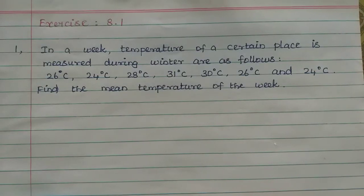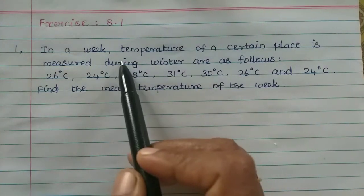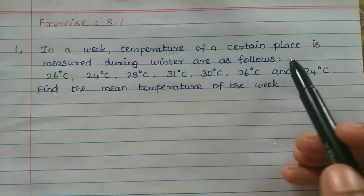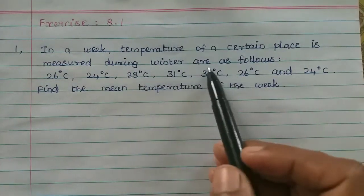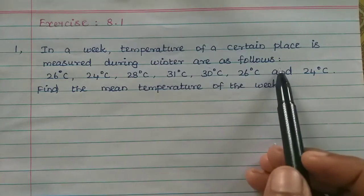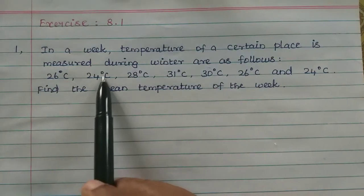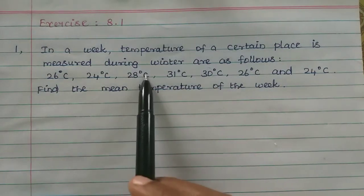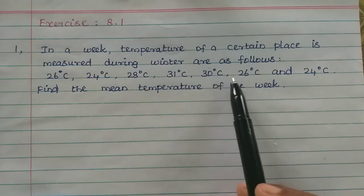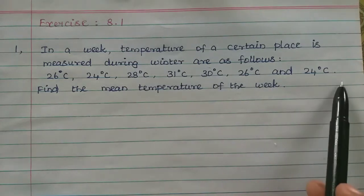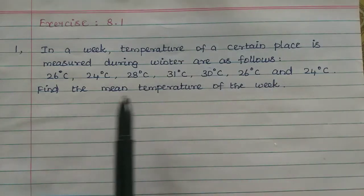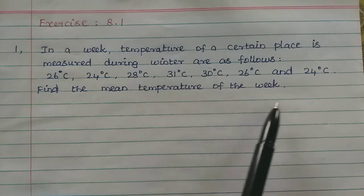Hi students. In this video we will do exercise 8.1. The temperature of a certain place is measured during winter as follows: 26°C, 24°C, 28°C, 31°C, 30°C, 26°C, and 24°C. Find the mean temperature of the week.